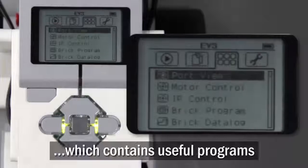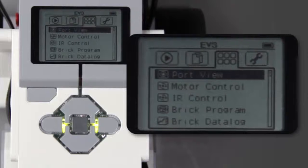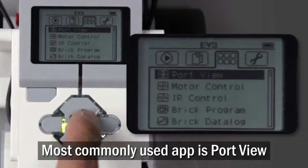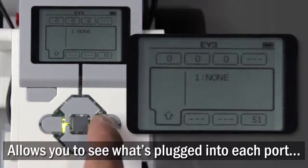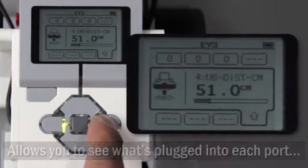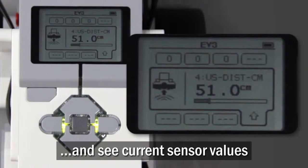The third tab is Brick Apps, which contains a number of useful programs. The most commonly used will probably be Port View, which allows you to see what is currently plugged into each port on the EV3 and what sensor or rotation value it is currently seeing.